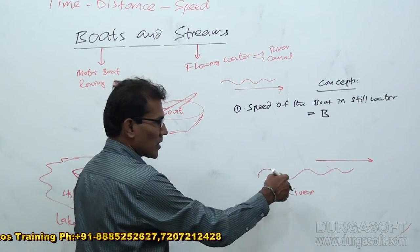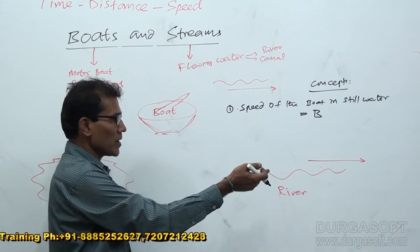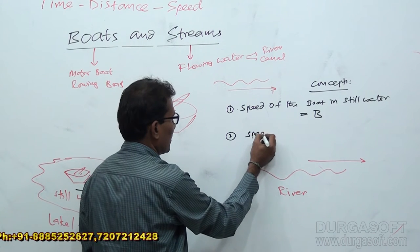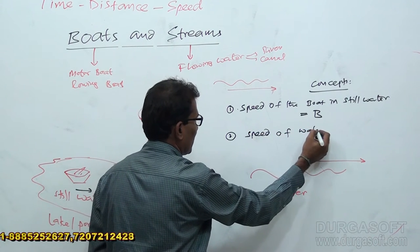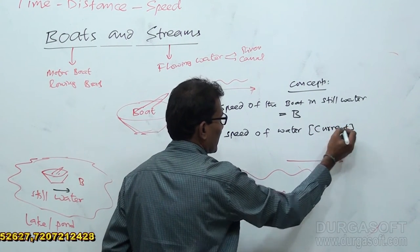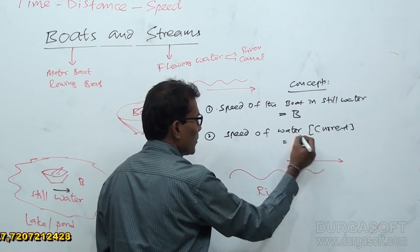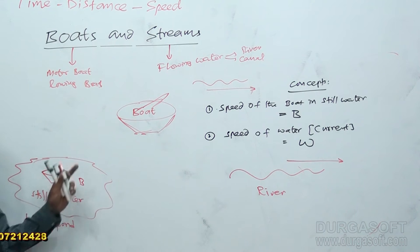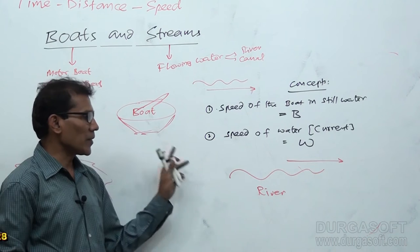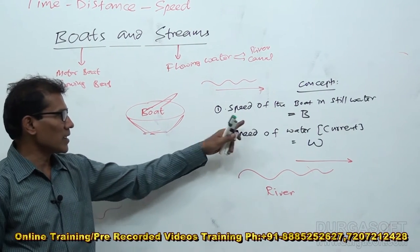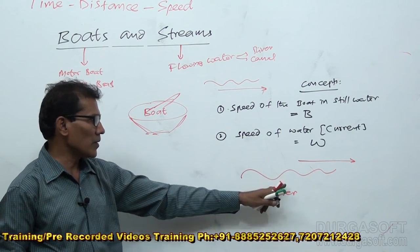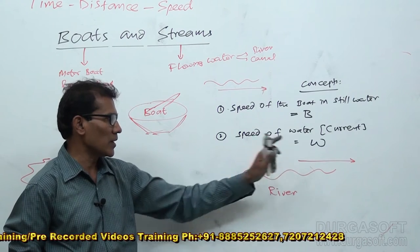Now, in a river the water is moving — it should have some speed. So, speed of the water — this is also called current — let us take W. Speed of the boat in still water is B, which is the original speed of the boat with no effect of the current. If the water is flowing with speed W, that is the speed of water we are taking as W.